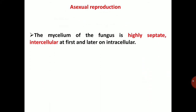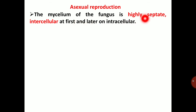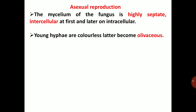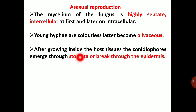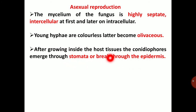For asexual reproduction: the mycelium is highly septate, intercellular at first and later intracellular. Young hyphae are colourless, later becoming olivaceous. After growing inside the host tissue, the conidiophores emerge through stomata or breakthrough the epidermis. The conidiophores are unbranched and bear conidia at the tips.